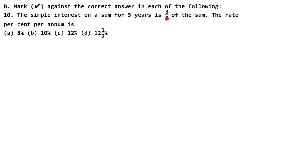Three-fifth — see, this is a proper fraction. Whenever it is a proper fraction, this means it refers to simple interest. If it is an improper fraction, then it is our amount. This is a way to recognize whether a given fraction refers to the amount or the simple interest.